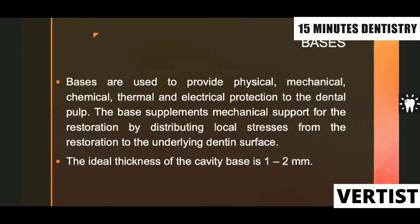Bases are used to provide physical, chemical, thermal, mechanical, and electrical protection to the dental pulp. A base supplements mechanical support for the restoration by distributing local stresses to the underlying dental pulp. The ideal thickness of a cavity base is 1 to 2 mm. Be careful: the base should be placed below the dentino-enamel junction, about 1 to 1.5 to 2 mm, leaving enough space for the final restoration — at least 2 mm minimum of amalgam thickness.